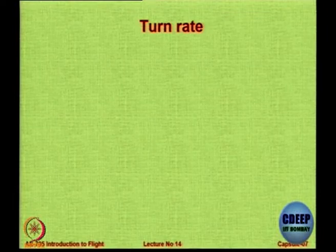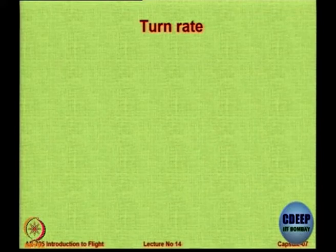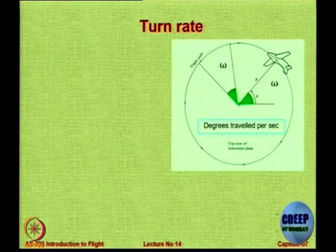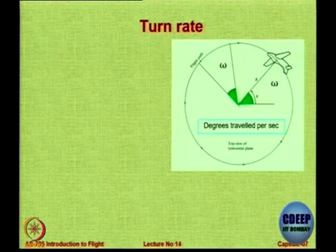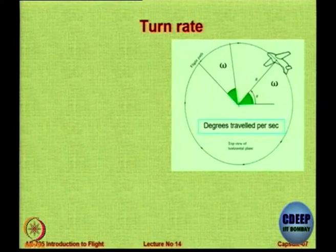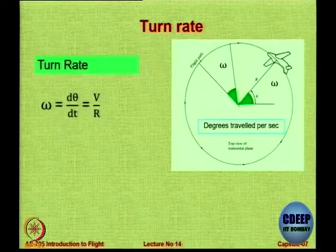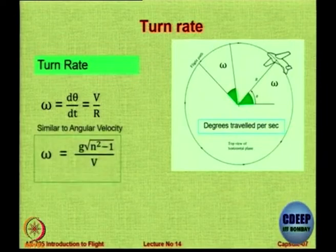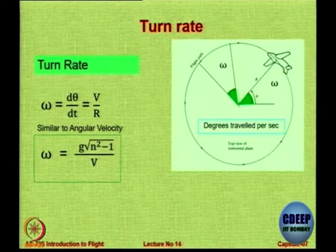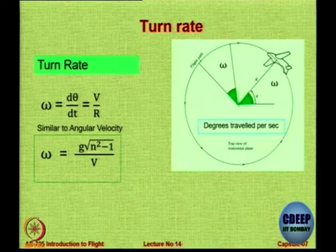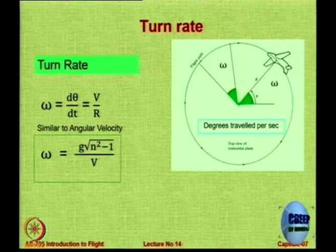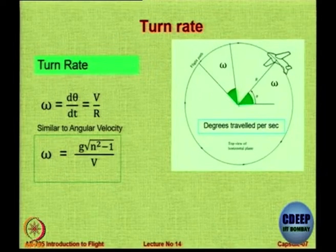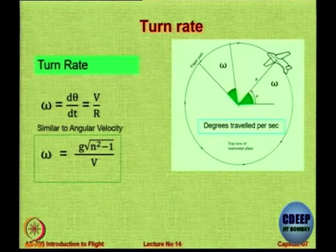The other aspect we need is the turn rate. When you are trying to close in on an enemy, you would like to have a larger value of omega — d theta/dt — degrees travelled per second. So omega = V/R, which gives omega = G√(N² − 1) / V. Here omega is proportional to √(N² − 1) and inversely proportional to V. If you want to turn at a faster rate, you have to be at a lower velocity.